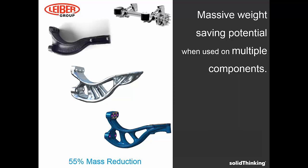I'm going to talk about a few case studies generated by working with our customers. The first one is the Leber Group. This particular component is an air spring carrier for a trailer arm. The trailer has three axles with two air spring carriers per axle, for a total of six components per the entire system. Leber used INSPIRE to reduce the mass from over eight kilograms to around four kilograms on the air spring carrier, which translated to roughly a 25 kilogram mass reduction across the entire assembly.